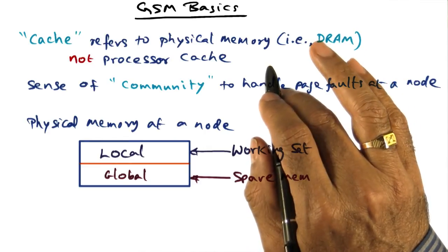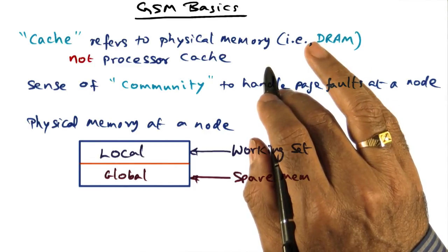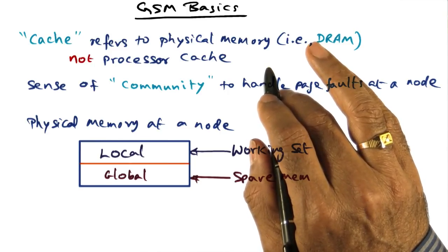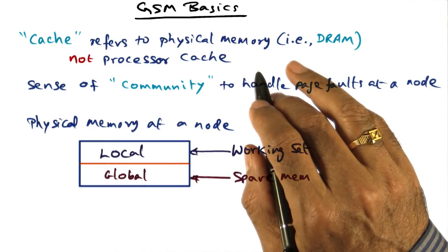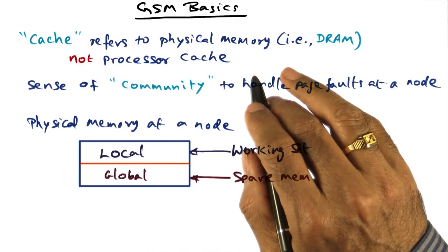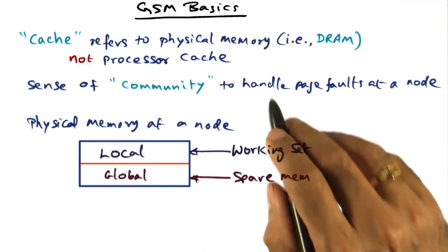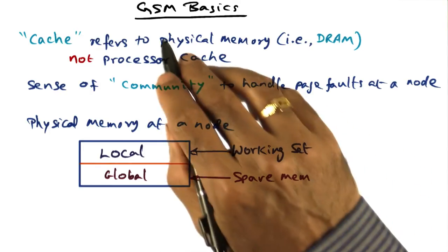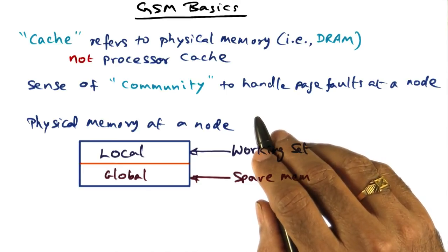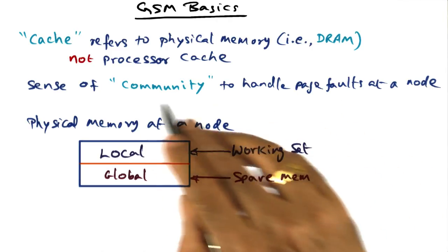So the goal in picking a replacement candidate in GSM is to pick the globally oldest page for replacement. If the memory pressure in the system is such that I have to throw out some page from the cluster memory onto the disk, the candidate page that I choose is the one that is oldest in the entire cluster. So managing age information is one of the key technical contributions of GSM. How to manage the age information so that we pick a globally oldest page for replacement in the community service for handling page faults.